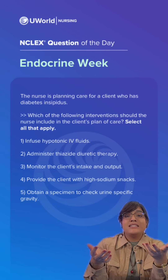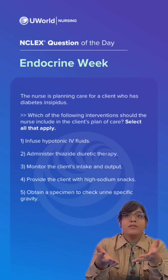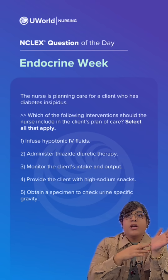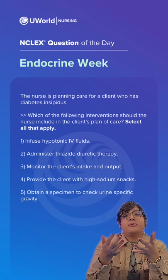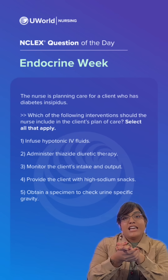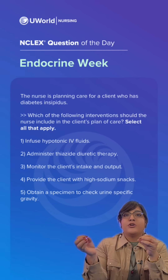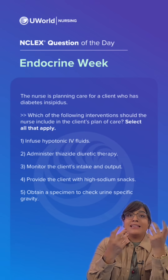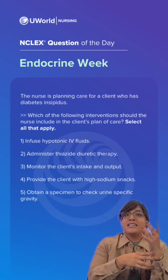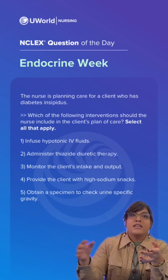Diabetes insipidus involves inadequate antidiuretic hormone, occurring because the kidneys are not responding to the hormone or there's a problem with hormone production in the hypothalamus. ADH is a hormone that promotes water reabsorption in the kidneys, and insufficient ADH causes excretion of significant amounts of diluted urine.